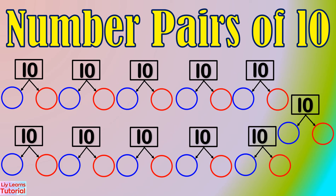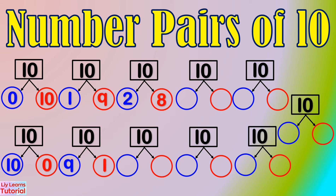After counting the blue dots, we discovered that the number pairs of 10 are: 0 and 10, 10 and 0, 1 and 9, 9 and 1, 2 and 8, 8 and 2, 3 and 7.